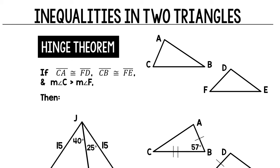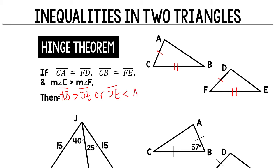So the hinge theorem: if segment CA is congruent to segment FD, and segment CB is congruent to segment FE — so those sides are congruent on two triangles — and the measure of angle C is greater than the measure of angle F, then by the hinge theorem segment AB will be greater than segment DE. Or equivalently, segment DE will be less than segment AB.